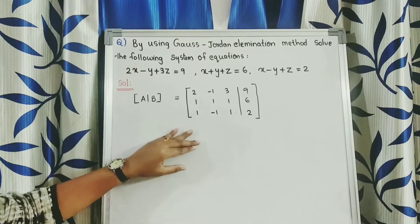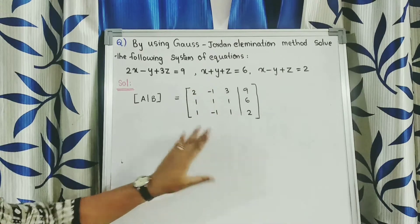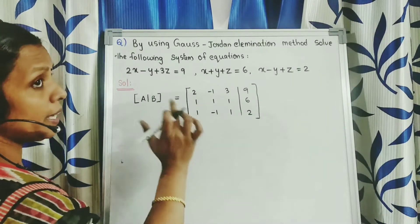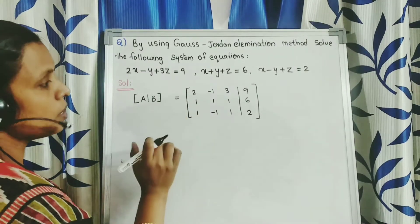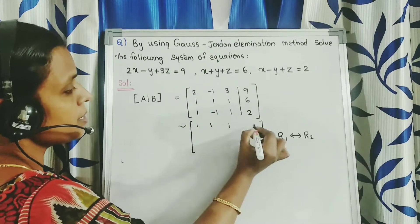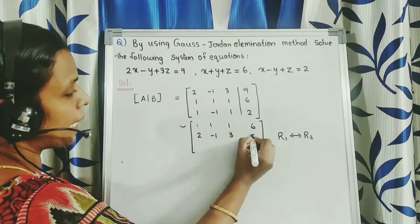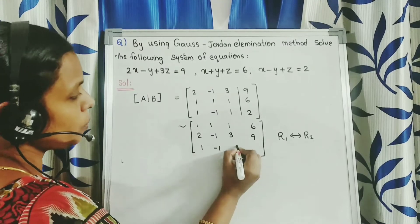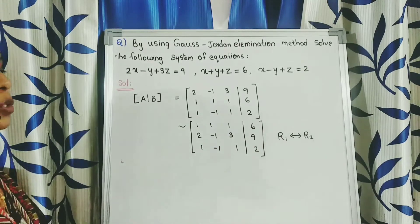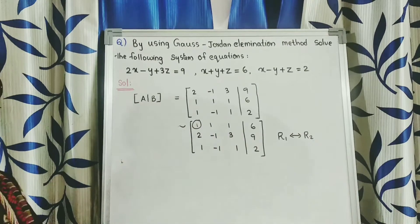Convert this augmented matrix to a diagonal matrix using row echelon form. We interchange R1 and R2 to make the A11 position equal to 1. After interchange, row 1 becomes 1, 1, 1, 6 and row 2 becomes 2, minus 1, 3, 9 and row 3 is 1, minus 1, 1, 2.